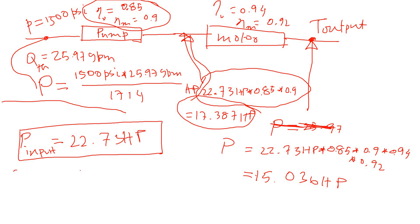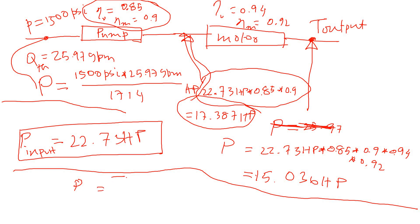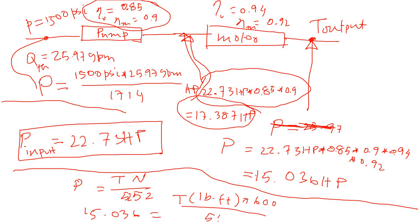The problem asks for torque, and we know that power equals torque times RPM divided by 5252. With power in horsepower, torque comes out in pound-feet. Plugging in: 15.036 = torque × 600 / 5252. Solving, the torque output I calculated is 131.6 pound-feet.